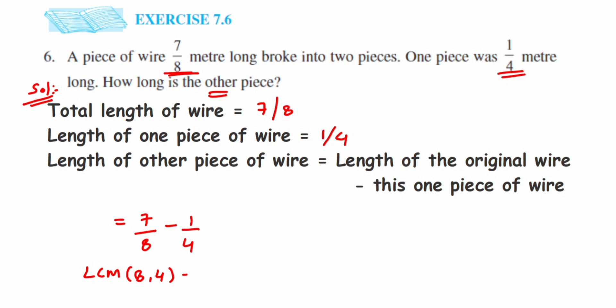For the first number, the denominator is already 8, so we don't have to change it. For the second number, we have to change it. So for 1/4, what should we multiply to get 8? It's 2. So multiply 2 in both the denominator and numerator.